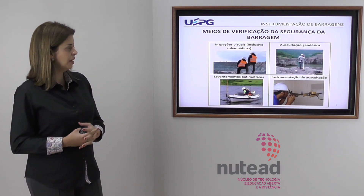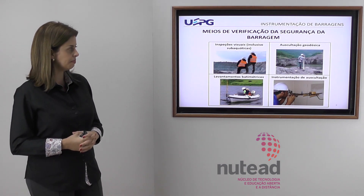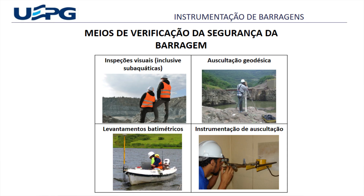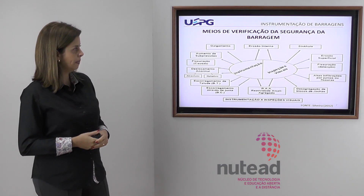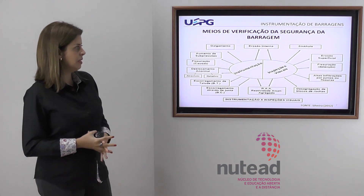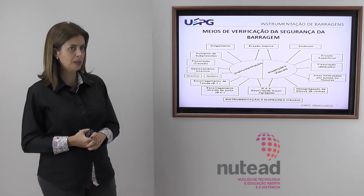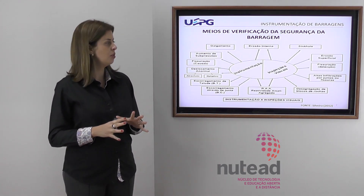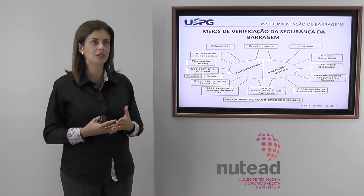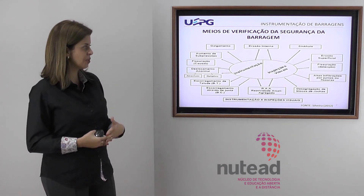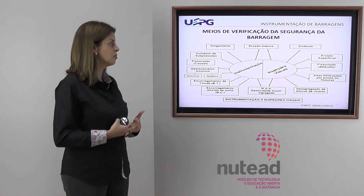Para verificar a segurança de uma barragem, temos algumas ferramentas: inspeções visuais, que podem inclusive ser subaquáticas; a auscultação geodésica; os levantamentos batimétricos; e também a instrumentação da auscultação, que é o foco dessa unidade. Os principais meios são a instrumentação e a inspeção visual — elas são complementares. Algumas coisas se detecta só com inspeções visuais, outras só com instrumentação.